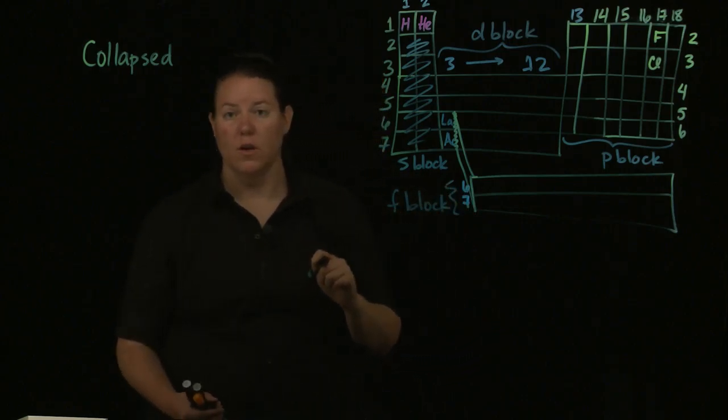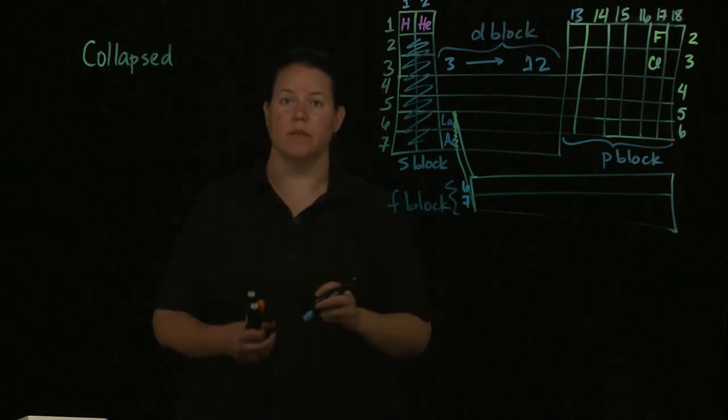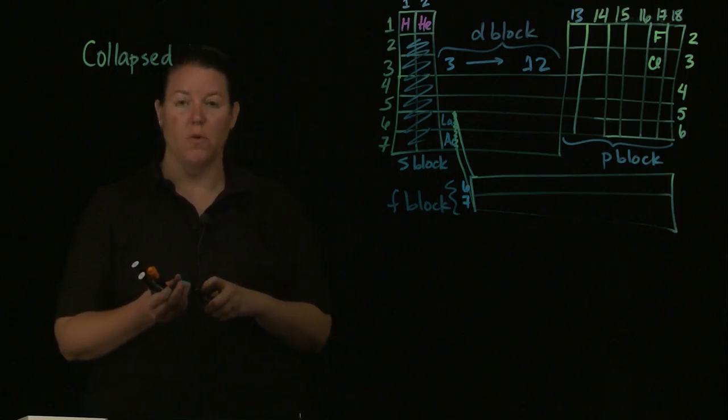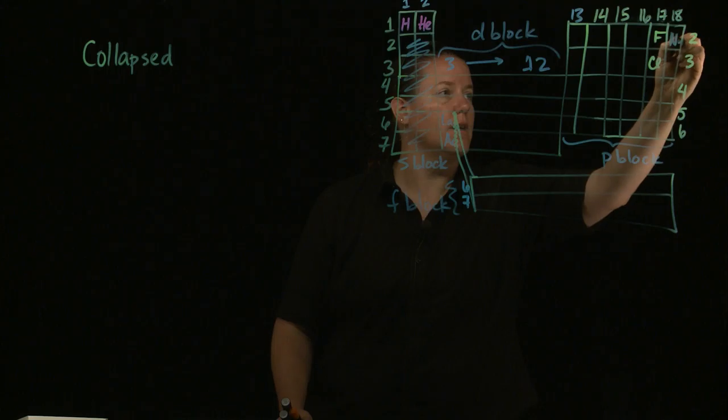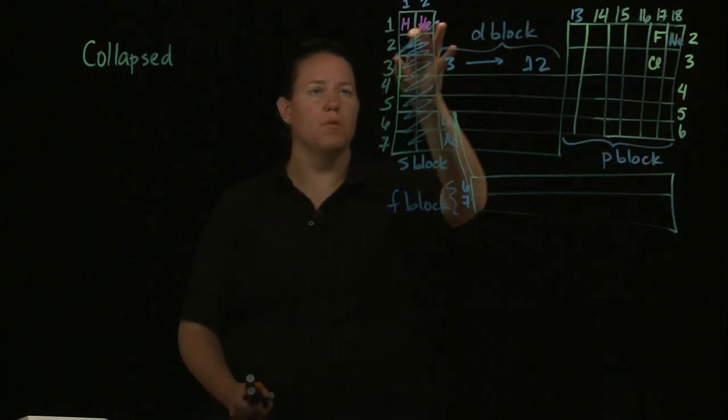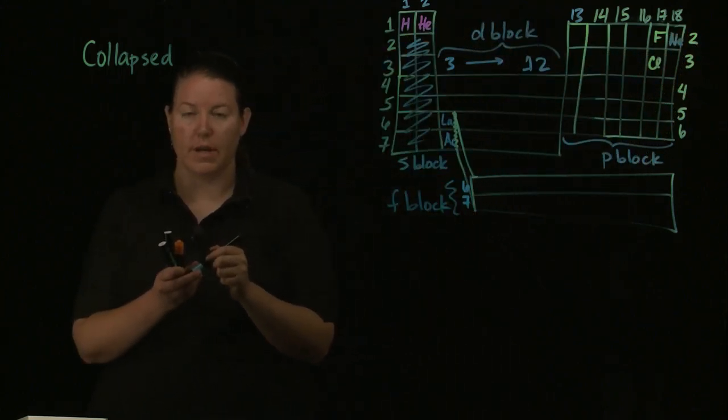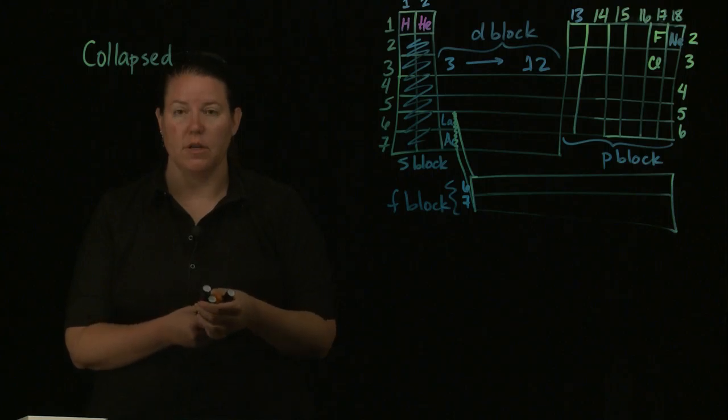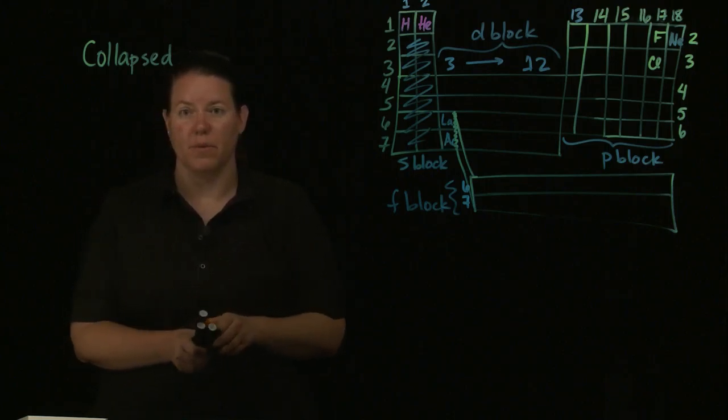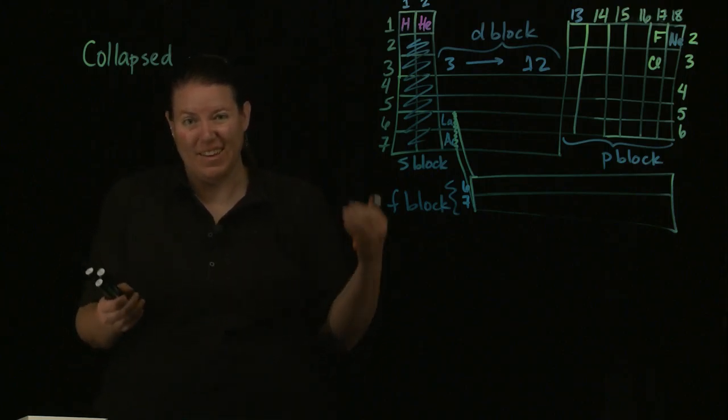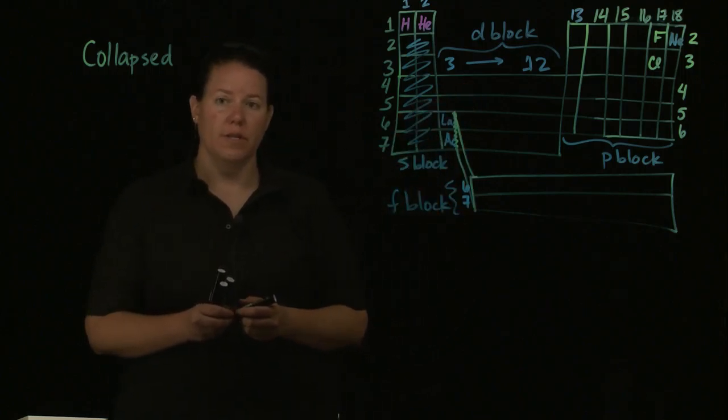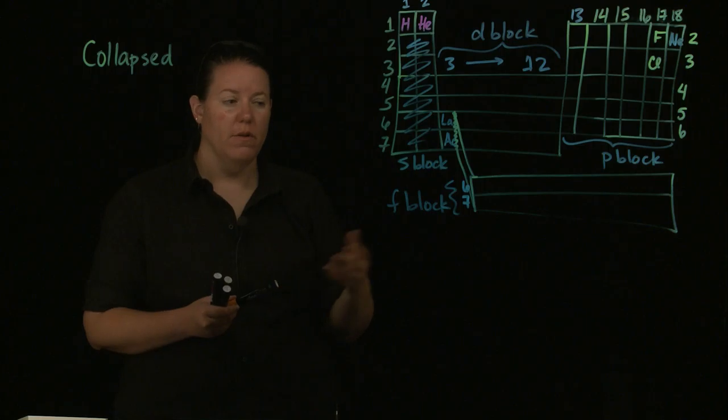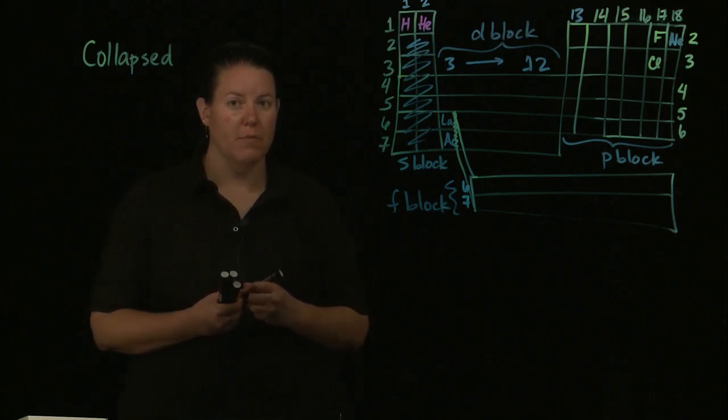So when we do collapsed or condensed notation, let's do maybe the noble gas notation for chlorine. So this is neon right here. Notice that we move helium over right next to hydrogen when we do this, basically so that we can eliminate one P as it would be on the periodic table.